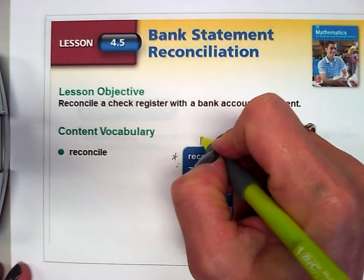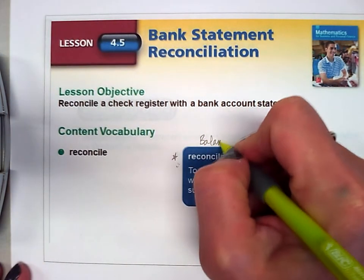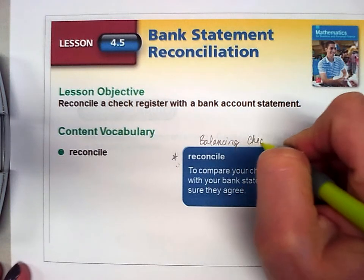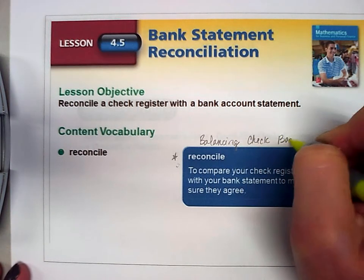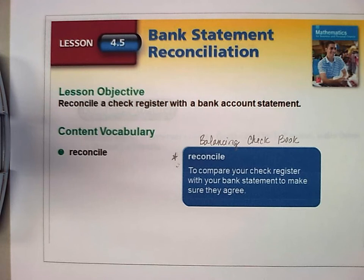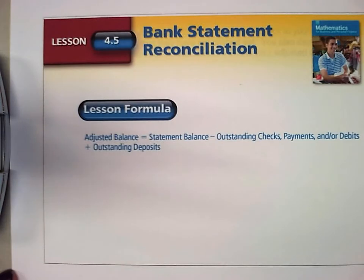Usually we say that we are balancing our checkbook. So if you've ever heard your parents say 'balancing your checkbook,' this is what they mean — they are matching what their statement balance says from their bank statement to what their actual check register says that they have.